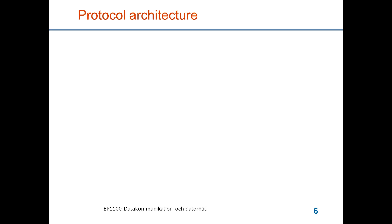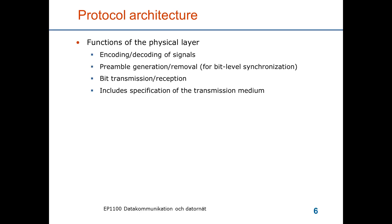So in modern standardization, it requires a network model, an architecture. So it defines the functions of the physical layer: the encoding and decoding of signals, the preamble and removal of the preamble for bit-level synchronization, the transmission and reception of bits, and specification of the transmission medium, such as what type of cables should be used, the connectors for the cables, or in what frequency bands a wireless transmission should be conducted.